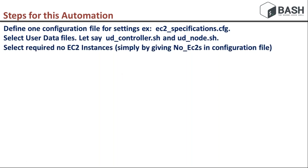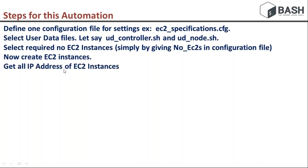You provide the number of EC2 instances in your Ansible EC2 specification config file, so that you launch the required number of EC2 instances. After providing this information, just run the 'create EC2 instance' script. After that, for further steps, I am going to collect all the IP addresses of the launched EC2 instances.